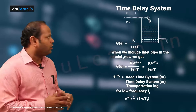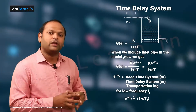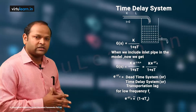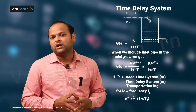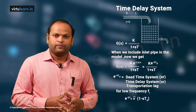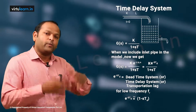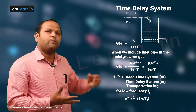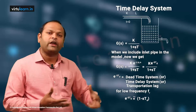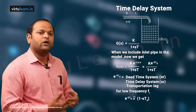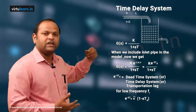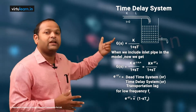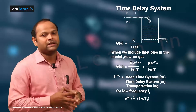Such systems are called time delay systems, also known as dead time systems or transportation lag systems. In control systems, especially process systems, time delay systems are quite common. If the time delay is small it is manageable, but if it is large it creates a lot of problems in the system.